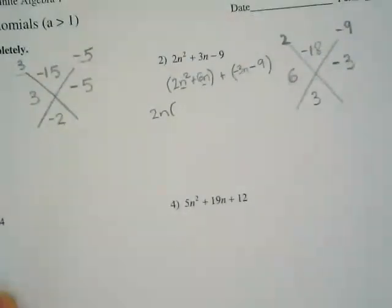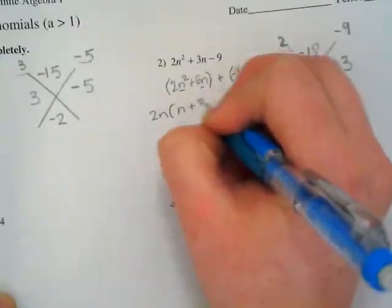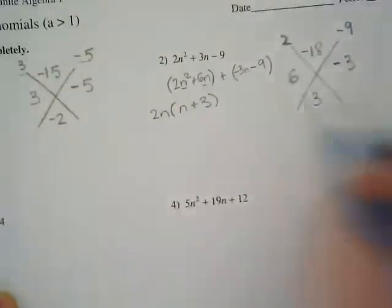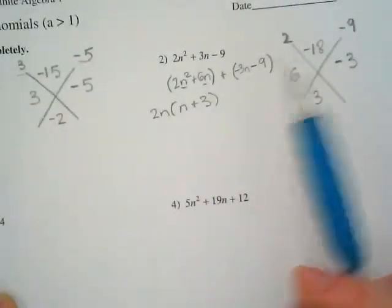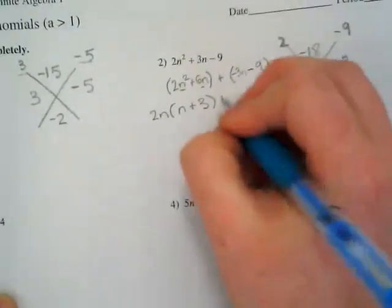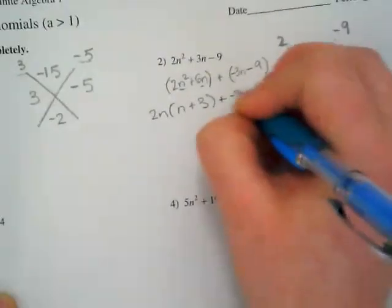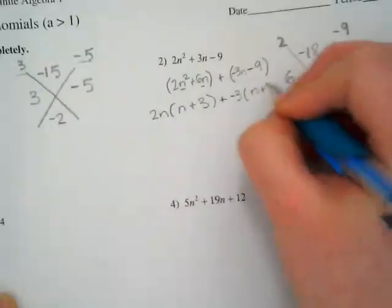And I am left with n plus 3. My greatest common factor between negative 3n and negative 9 is negative 3. So I'm going to factor out negative 3, and I am left with n plus 3.